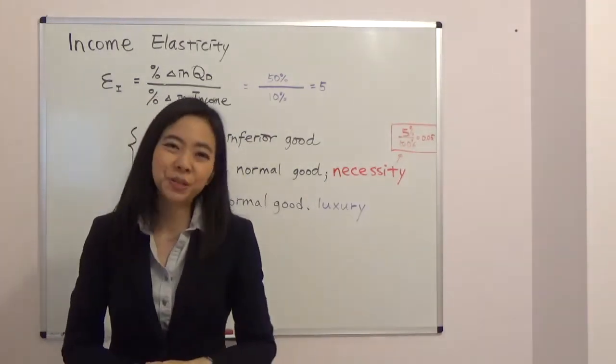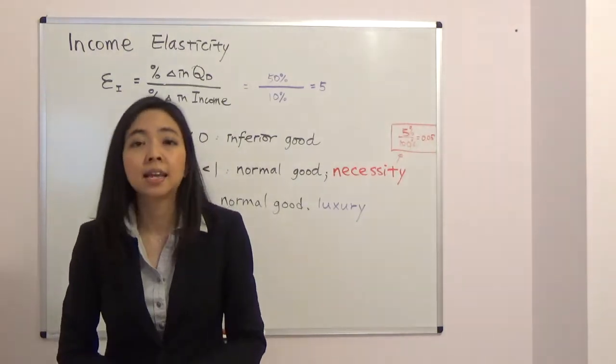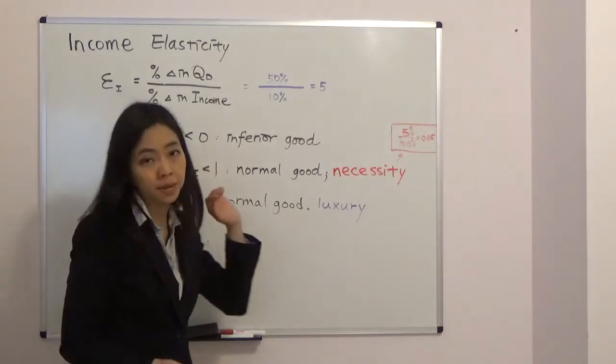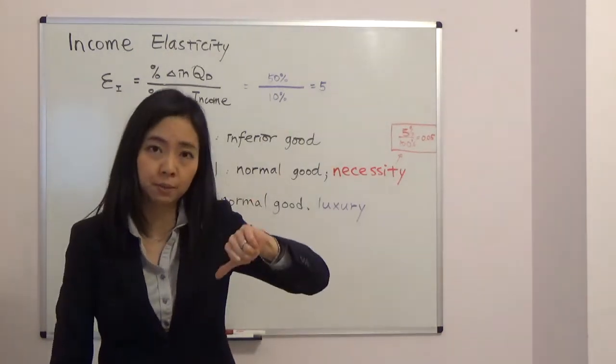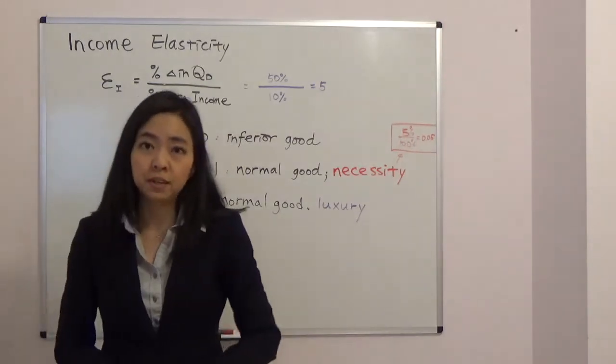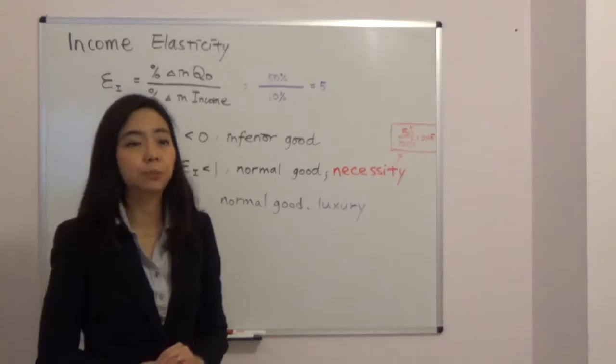So think about bus rides. If you prefer to drive than take bus rides, then after your income goes up, you no longer take bus rides and therefore your quantity demanded for bus rides goes down when your income goes up. So bus rides to you will be an inferior good.